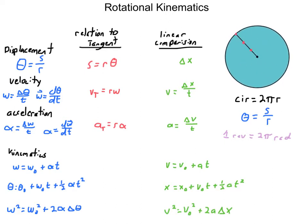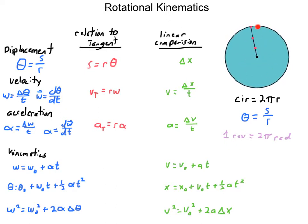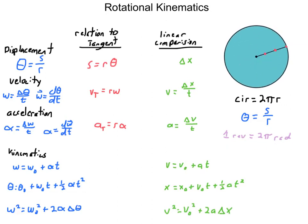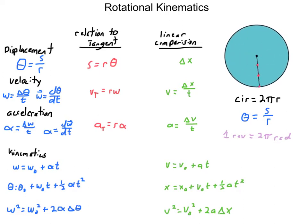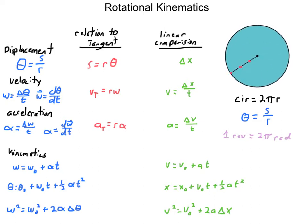Something else to remember: a full revolution going all the way around has 2π radians in it. There are 2π radians in an entire circle, so one revolution. Anytime you need to convert from revolutions to radians to make units match up - for example, angular acceleration is often in radians per second squared - just multiply by 2π radians.